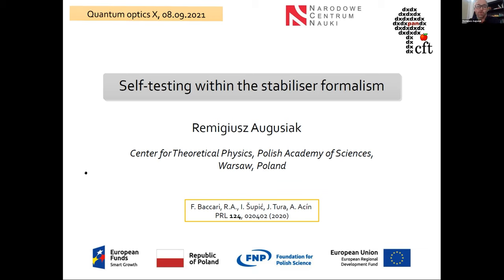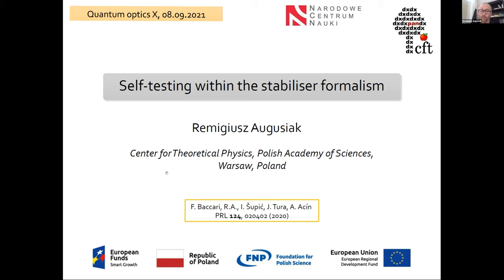My talk is going to be about self-testing within the stabilizer formalism. When I was proposing this talk I was more optimistic about the number of results I could present, but I think 20 minutes is not enough, so I will concentrate only on one, which is published in this paper together with Flavio Vacari, Ivan Shoupich, Giorgi Ture, and Antonio Assin. This is about our construction of a certain class of Bell inequalities for graph states, and I will show you how to use them for self-testing of those states.